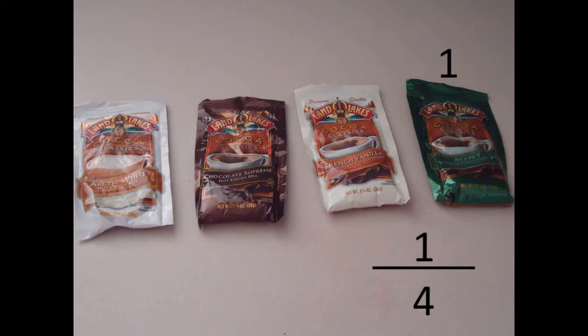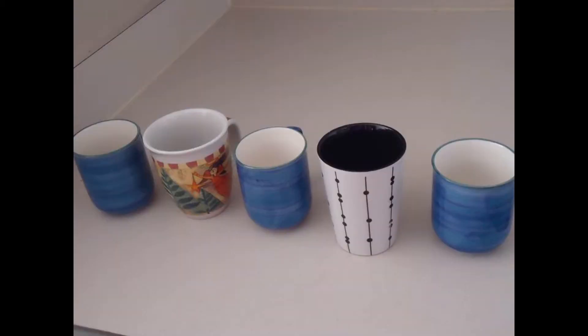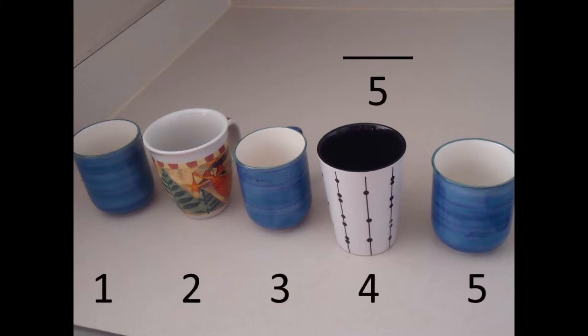If Ms. Rose is going to drink hot chocolate, she's going to need a mug to put it in. Let's find the fraction of mugs that are blue. First, we need to find the denominator. What's it going to be? 5! Great job! Because there are 5 total mugs. Now we need to find the numerator. What should it be? Correct! There are 3 blue mugs, so our numerator will be 3. So the fraction of the mugs that are blue is 3 fifths.